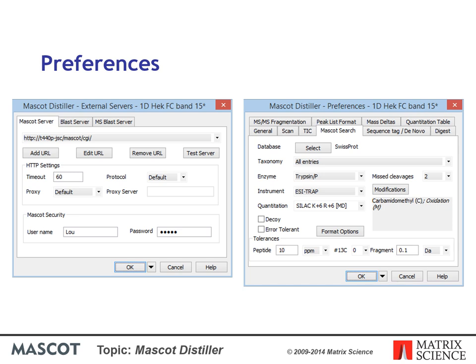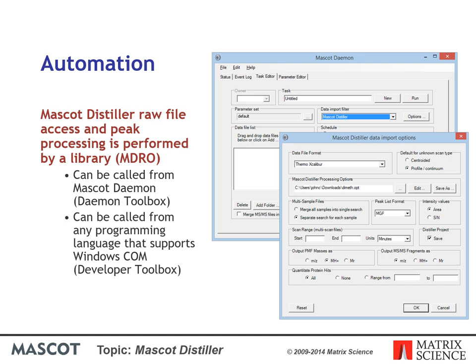There are many other options dialogs in Distiller — press F1 at any time to get context-sensitive help. Two of the most important are External Servers, where you select your Mascot server, and Preferences, where you set defaults for various aspects of Distiller such as the Mascot search and de novo. The Mascot Distiller libraries, which provide the raw file access and peak processing, can be called by other applications such as Mascot Daemon.